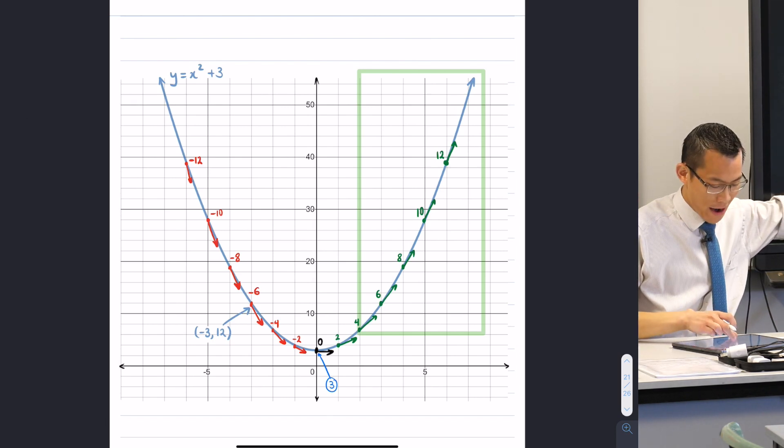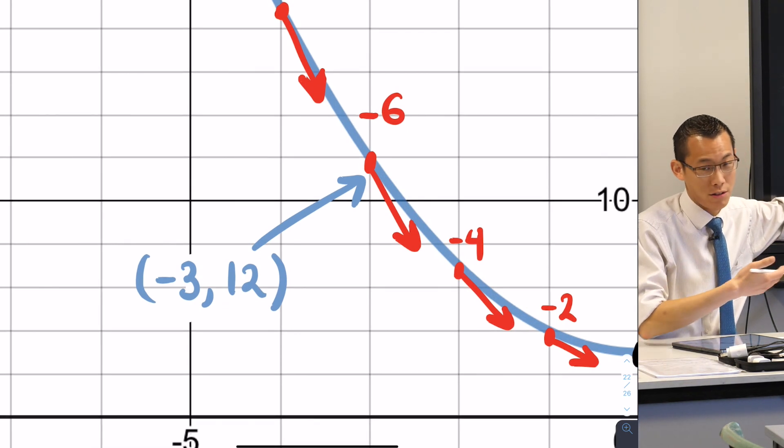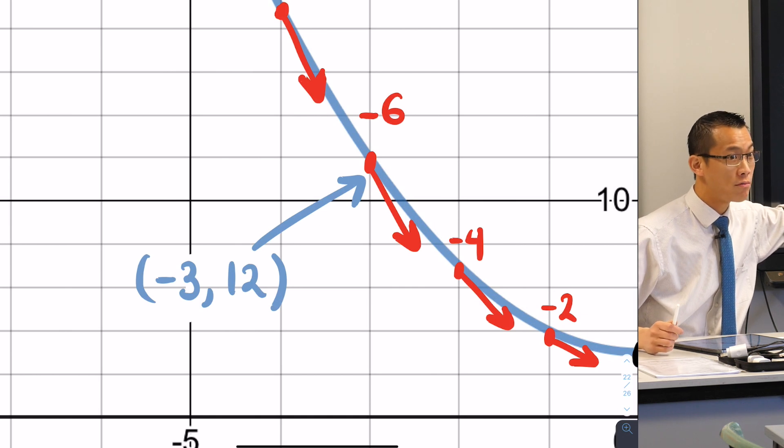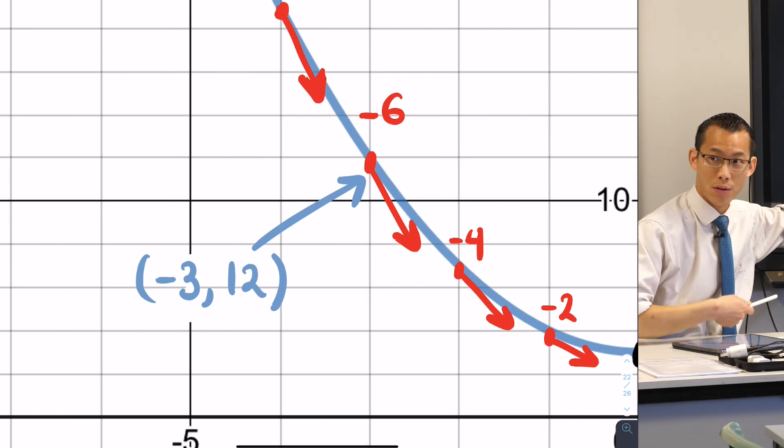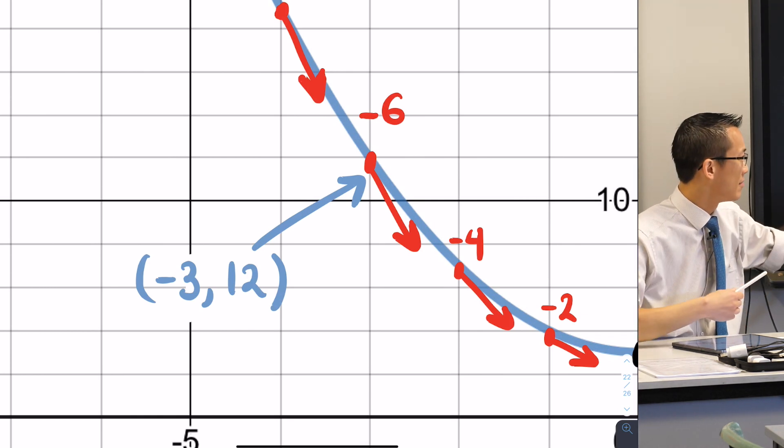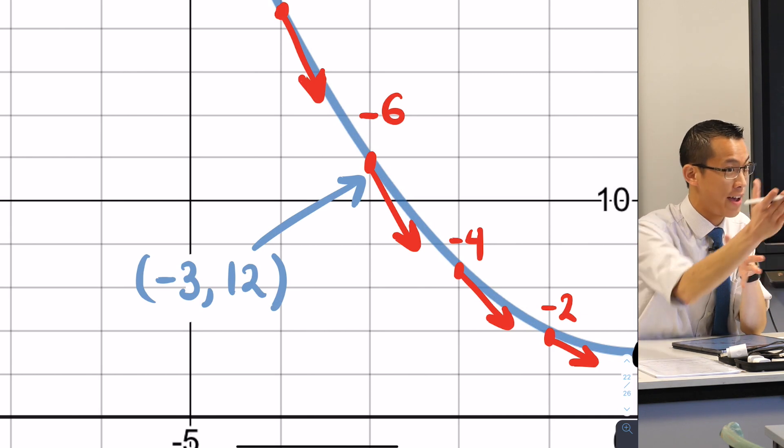So that's why I asked you right at the start of the question to find a point. Now you didn't have to put this point, you could have put another point like (1, 4) that would have been on the parabola, or (2, 7) that would have been on the parabola, but you've found this one already, so why not use that as your point for scale?